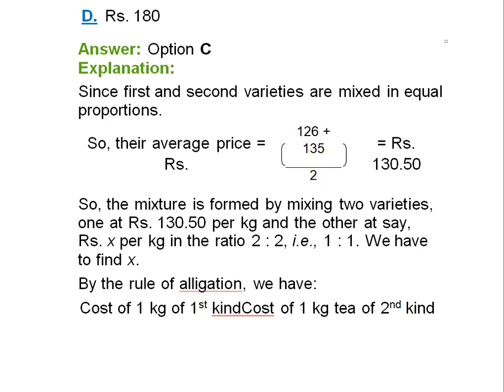So their average price would be 126 plus 135 divided by 2, which is Rs. 130.50. So the mixture is formed by mixing two varieties, one at Rs. 130.50 and the other at let's say x in the ratio 2:2 or 1:1. So we have to calculate x.